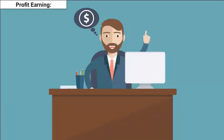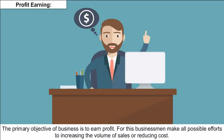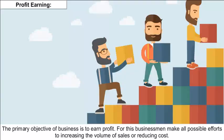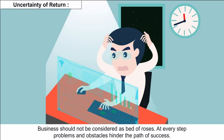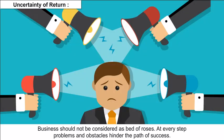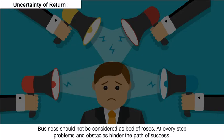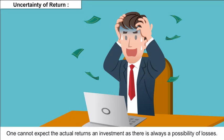Profit earning: the primary objective of business is to earn profit. For this, businessmen make all possible efforts to increase the volume of sales or reduce cost. Uncertainty of return: business should not be considered a bed of roses — at every step, problems and obstacles hinder the path of success. One cannot expect the actual returns on investment as there is always a possibility of losses.